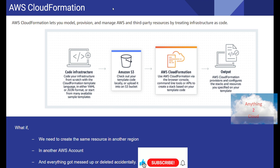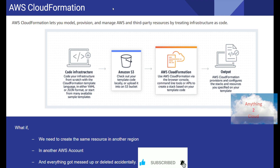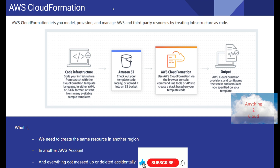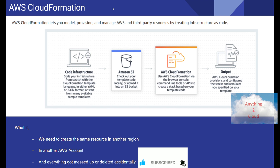The code can be written either in YAML or JSON file. YAML is preferred now as compared to JSON — the majority of companies prefer YAML. You can upload this YAML file to an S3 bucket or keep it locally. Once the YAML file is ready, you can use AWS CloudFormation to create the services you want.